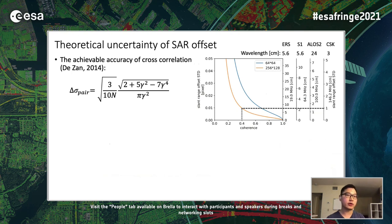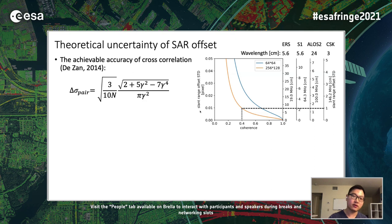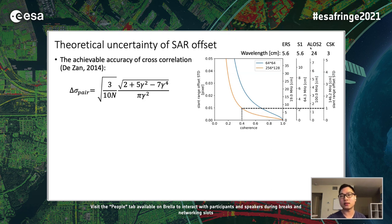Theoretically, for a single pair of SAR offsets, the achievable accuracy of cross-correlation is a function of the number of samples n and the spatial coherence. The y-axis on the left shows offset standard deviation in pixels, and on the right in centimeters for different range bandwidths of SAR missions. For modern SAR satellites such as Sentinel-1, ALOS-2, or Cosmo SkyMed, given a spatial coherence of 0.4 and a relatively large window size, we can already achieve a standard deviation of around 2 centimeters or less, well within the scale of a radar wavelength.